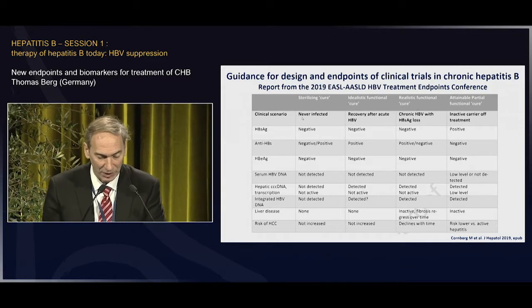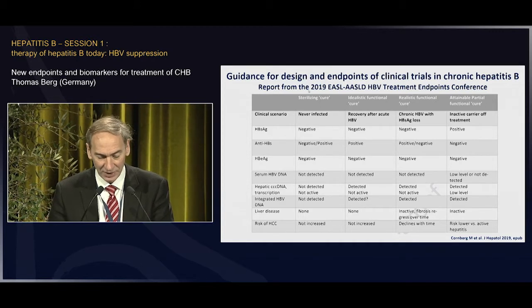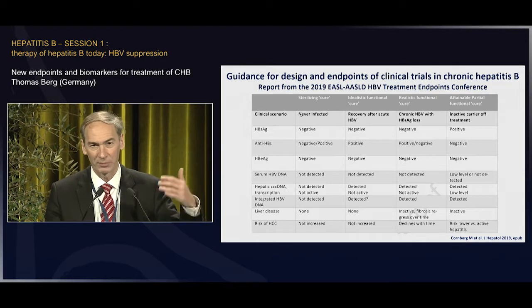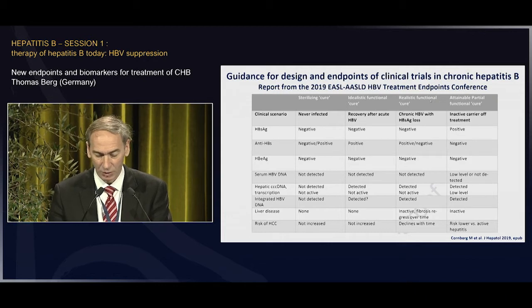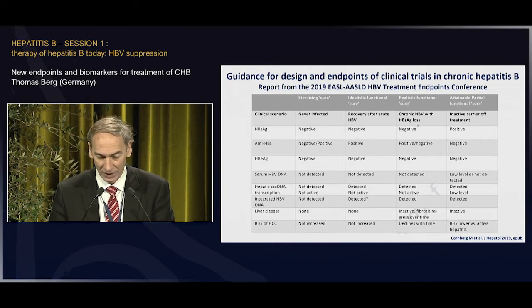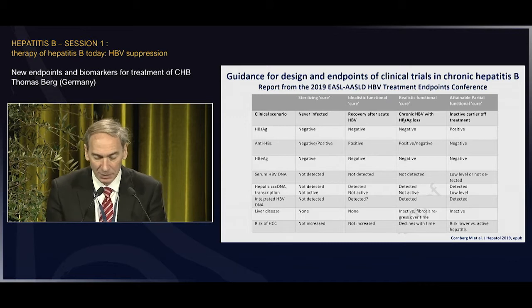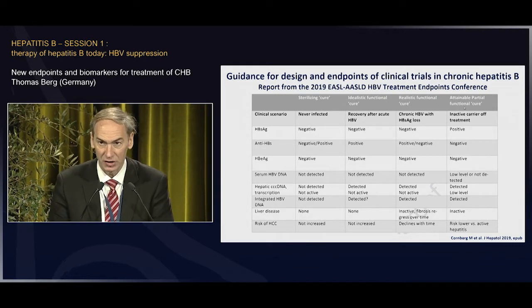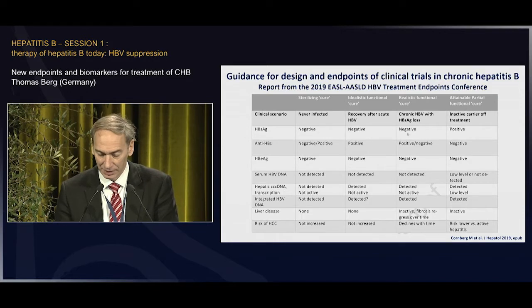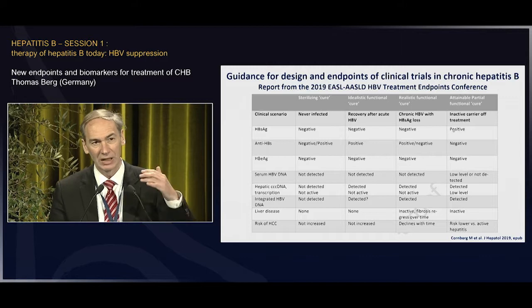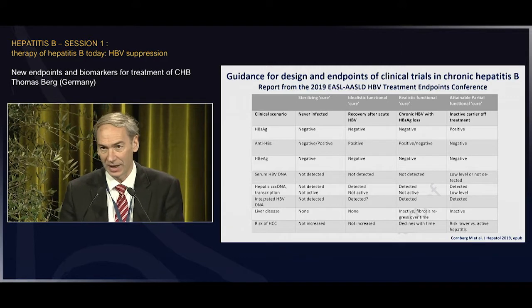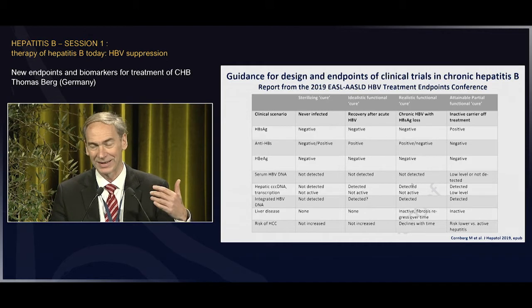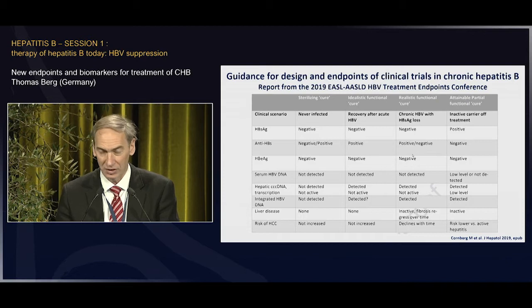You can see below the clinical scenario — what does it really mean? Sterilizing cure means you achieve something by treating a patient as he would never be infected, or recovery after acute hepatitis B. What we are aiming for so far is a functional cure, meaning a chronic hepatitis B virus infection where you achieve HBsAg loss. What is new with the new guidance is a kind of attainable partial functional cure, where it's not necessarily a prerequisite that you lose HBsAg, but that you reach a true inactive carrier state where all disease activity markers are inactive and you have a very good long-term outcome.